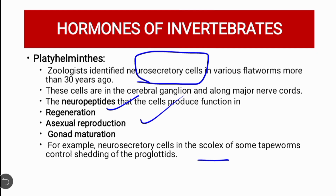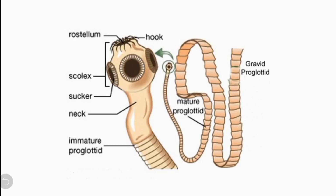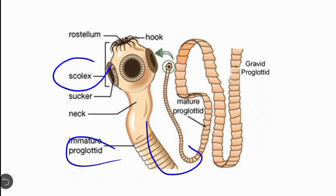In the scolex of some tapeworms, the neurosecretory cells in the head control the shedding of proglottids. The scolex is involved in shedding the proglottids present along the length of the tapeworm body.